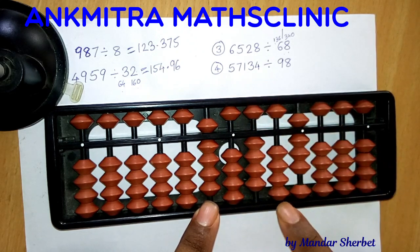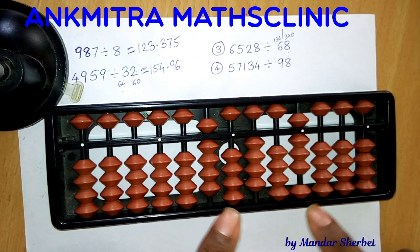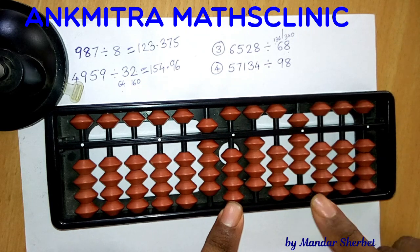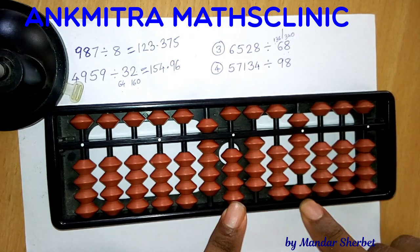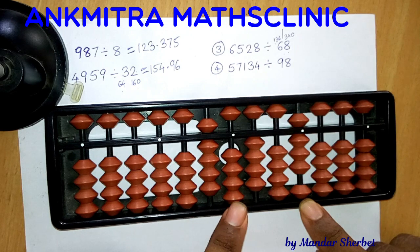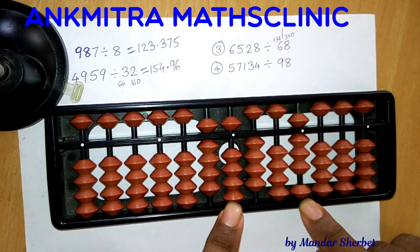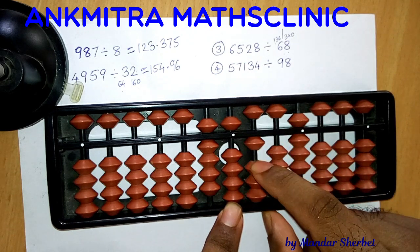40 is smaller than our divisor, so we move to the next rod — the units place. On the question set we now have the number 408. We can subtract 5 times 68, which is 340. I'll take 5 on the answer rod here, then subtract 340 from 408. For subtracting 3 on this rod, I'll do plus 6 minus 10. After subtraction, we have 68 remaining.